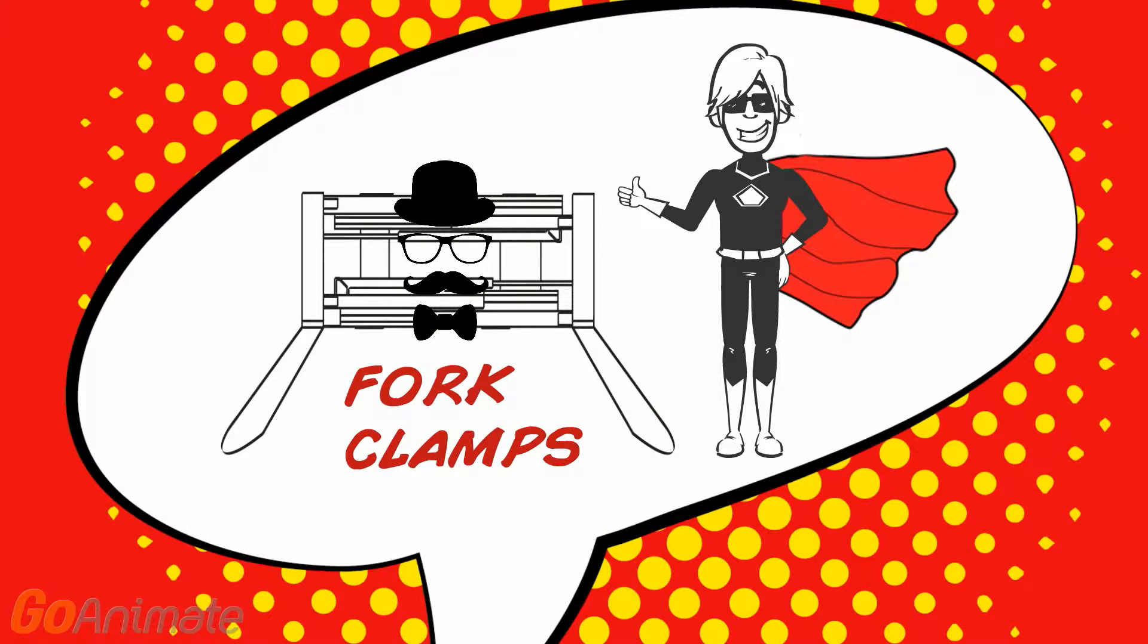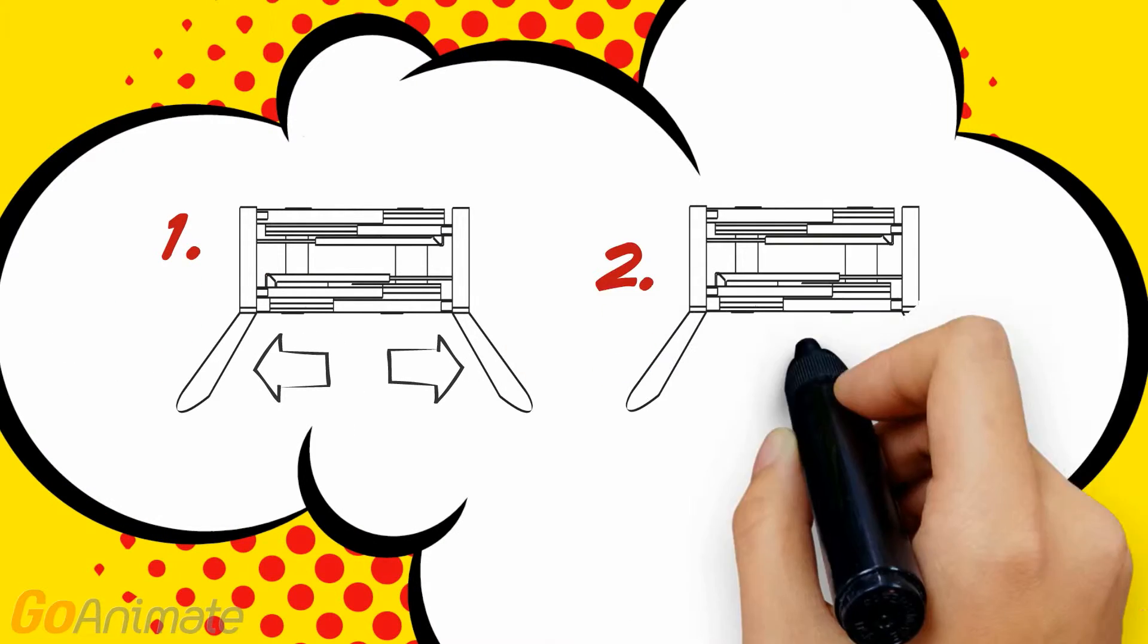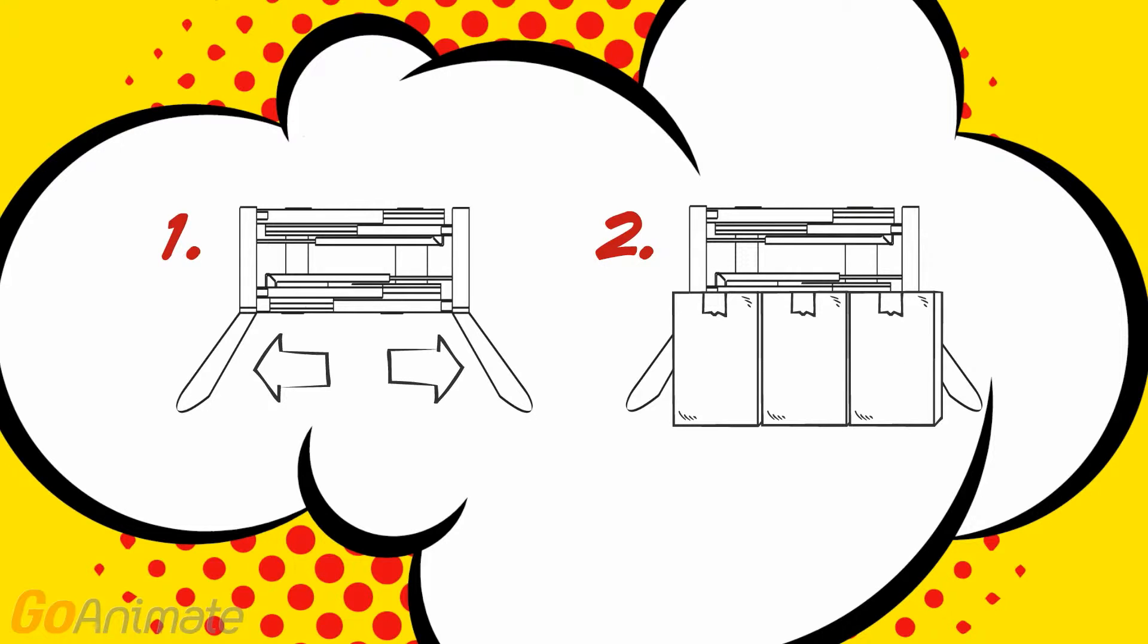Fork clamps are actually a superhero in disguise. This multi-purpose attachment can be used both as a fork positioner and for clamping loads.